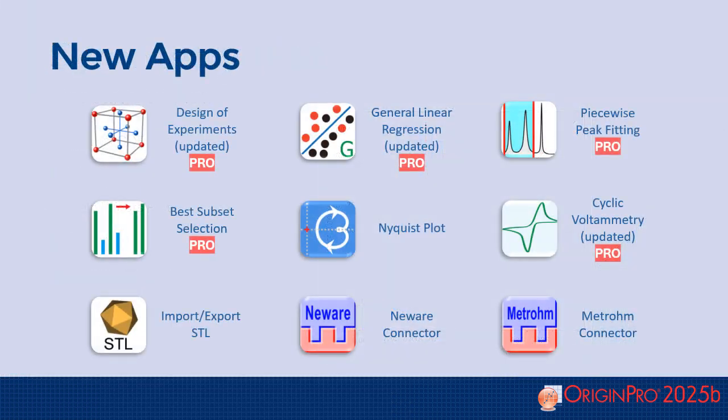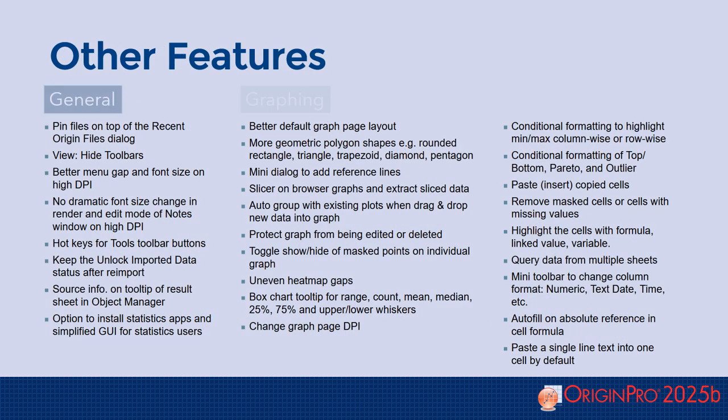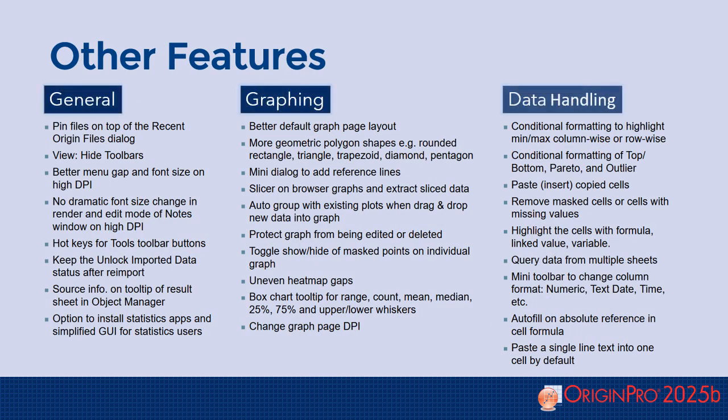Origin 2025b introduces a number of new and updated apps, including two new types of data connectors, fitting and analysis tools, and further improvements to our Design of Experiments app. Here are some other features included in 2025b.